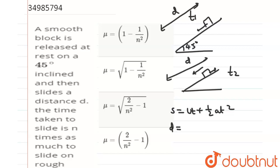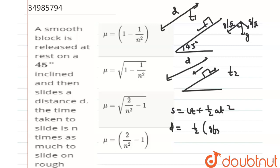Initial velocity is 0. Acceleration equals g·sin45° = g/√2. So d = ½ · (g/√2) · t1². Therefore t1 = √(2√2·d / g).